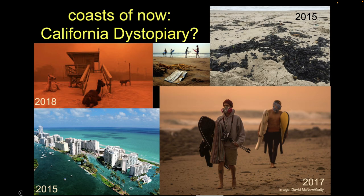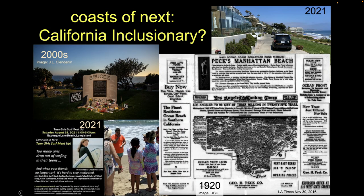So we have the imaginary, the dystopiary, and this new thing we appear to be moving into. It's completely arguable whether we're there yet, but the next level — beyond things being perfect or things being horrible — is: things can be better. We acknowledge the imaginary, we acknowledge the dystopiary, but maybe we can do things differently. I think the best example of this is Bruce's Beach down in Manhattan Beach.